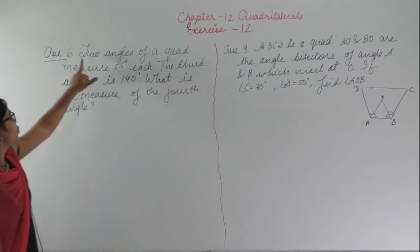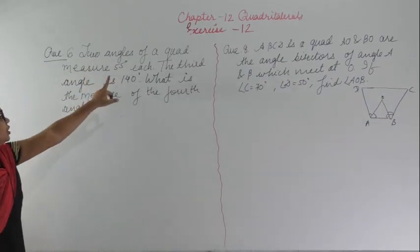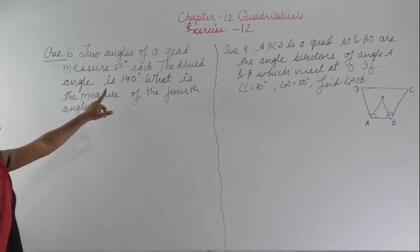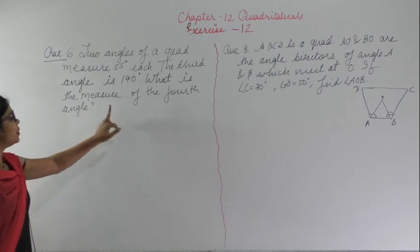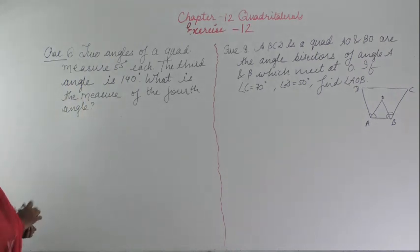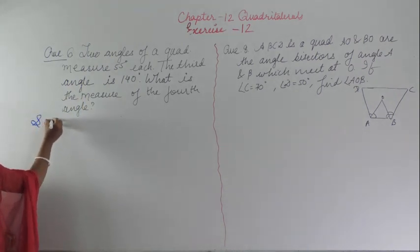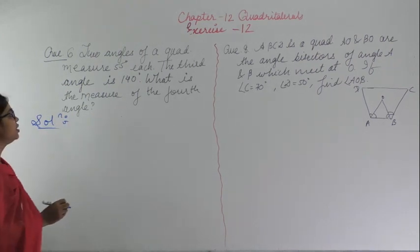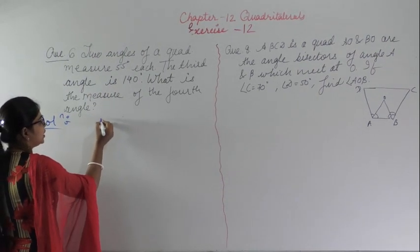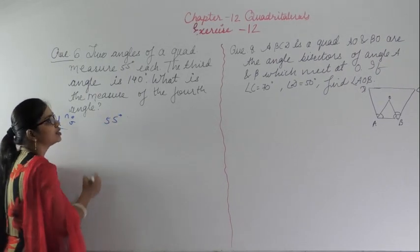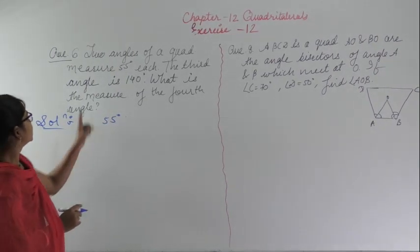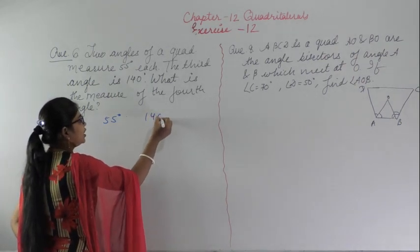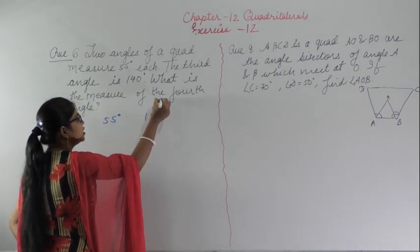Question 6: Two angles of a quadrilateral measure 55 degrees each. The third angle is 140 degrees. What is the measure of the fourth angle?